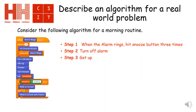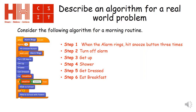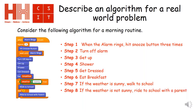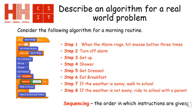We then must get up — step three. Step four, we must shower. Step five, get dressed. Step six, eat breakfast. Step seven, we have a big decision to make: if the weather is sunny, we're going to walk to school, but if the weather is not sunny, we're going to ride with a parent. Now, all of these steps have been put in a particular order, and when we write a list of ordered instructions, that's actually called sequencing — it's the order in which instructions are given.